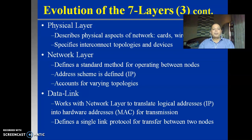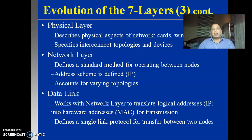The next layer is the network layer. It defines a standard method for operating between the nodes. Node is nothing but the computing devices that are in the network. This networking layer defines a standard method - a standardization for operating between the nodes. In such a huge network, we need to identify each and every node, and therefore we must have an addressing scheme. We have seen that this particular network is analogous to a city, and in the city, when the postman wants to distribute some letters or communication between two persons, they need to have addressing schemes - and therefore we write an address on the envelope.